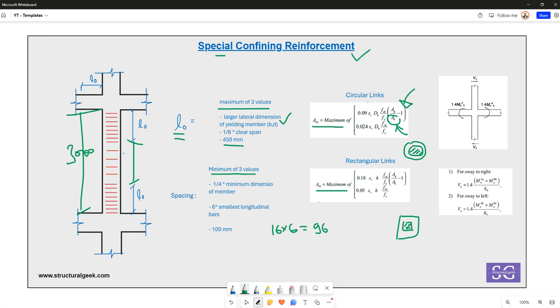Similarly, special confining reinforcement not only needs to be provided in columns but also in beams. The spacing at the beam end should be lesser, whereas it could be more within the midspan of the beam.